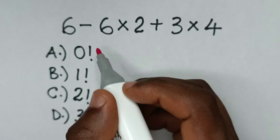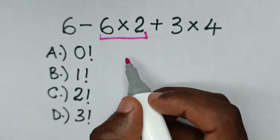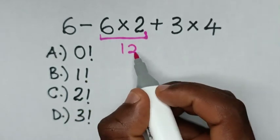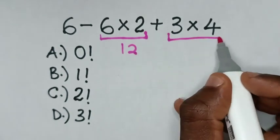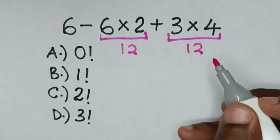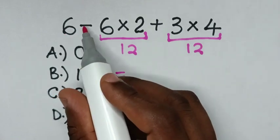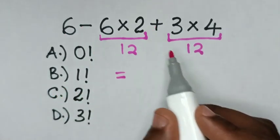So, first we'll start to deal with this multiplication of 6 times 2 is 12, and this multiplication of 3 times 4 is 12. Then it will be equal to 6 minus 12 plus 12.